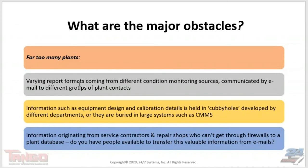The major obstacles are that information comes from many different sources. Plants — whether doing condition monitoring themselves or through service contractors — are probably using different brands of technology for vibration versus thermography, meaning each has its own technology database for managing data collection and analysis. When a scheduled route or special test is done, results typically get communicated by email to different people and groups, especially split between mechanical and electrical — and those often operate as two very different worlds.